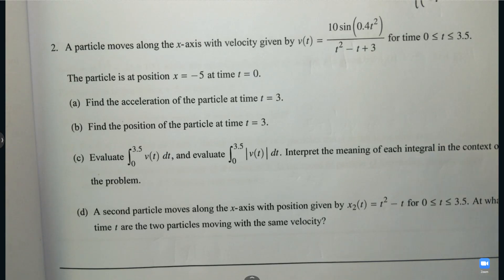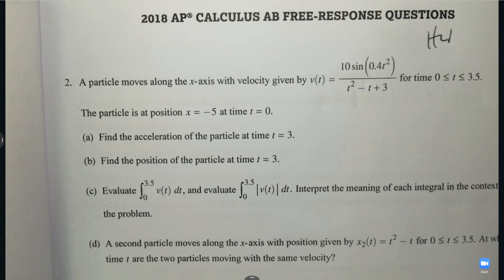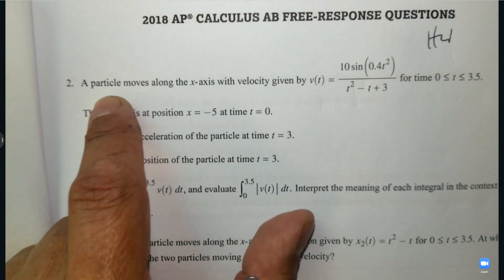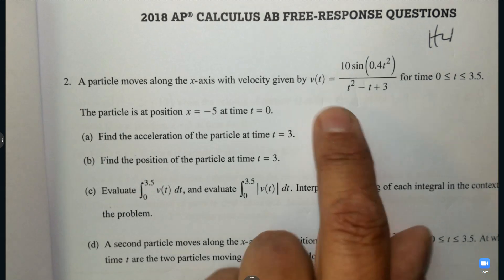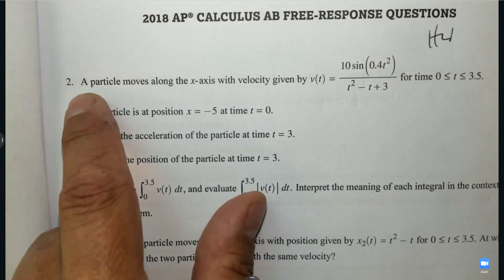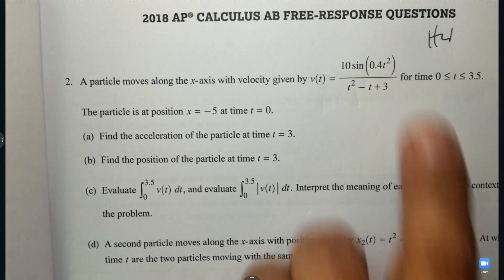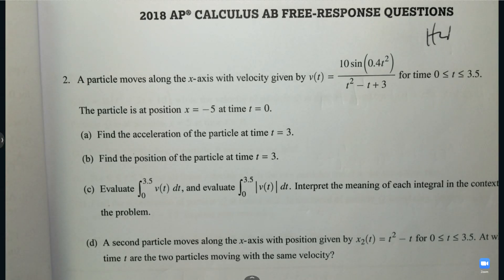All right, here we are. Question number two, this is your homework from 2018, the actual question. Let's do it together. I hope you do it first. I really do, that you practice first and then you're going to check to see if you did it right. Number two means we're using our calculator. So we're going to type this in first. Take out your calculator.